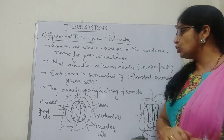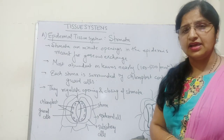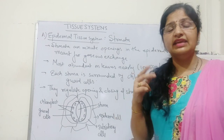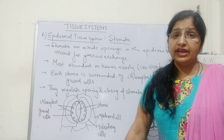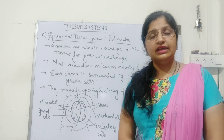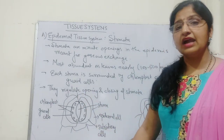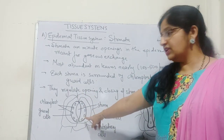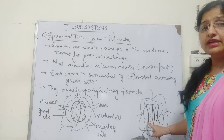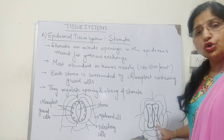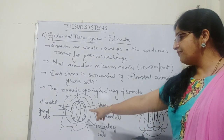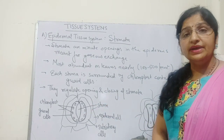Each stoma is surrounded by chloroplast-containing guard cells. Two guard cells regulate the opening and closing of stomata. In a dicot leaf, the shape of the guard cell is bean-shaped, whereas in a monocot leaf the guard cell is dumbbell-shaped. Monocot leaf contains a pair of dumbbell-shaped guard cells, while in the dicot leaf the shape is bean-shaped.